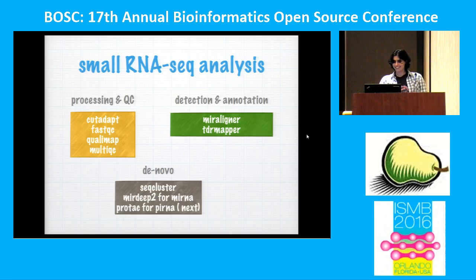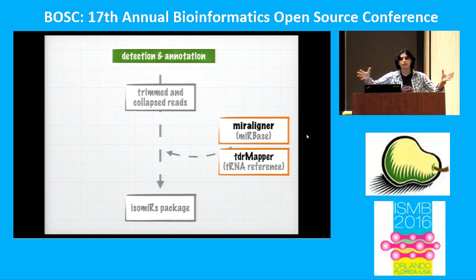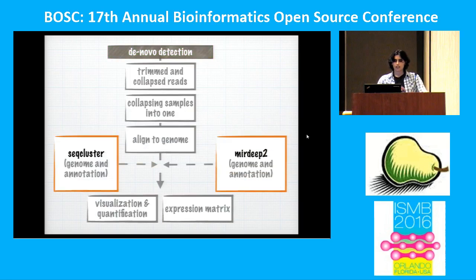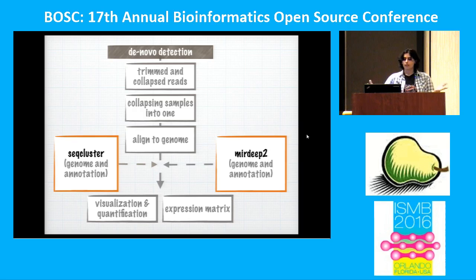For detection and annotation, the pipeline is straightforward: you trim your reads, collapse them, and then use one tool or another to get expression of microRNA or tRNA. For microRNA there is a package that allows very good downstream analysis including clustering, differential expression, and visualization for isomiRs. For novel detection, we also collapse all samples into one and map to the genome to get more coverage, then generate expression for each sample.